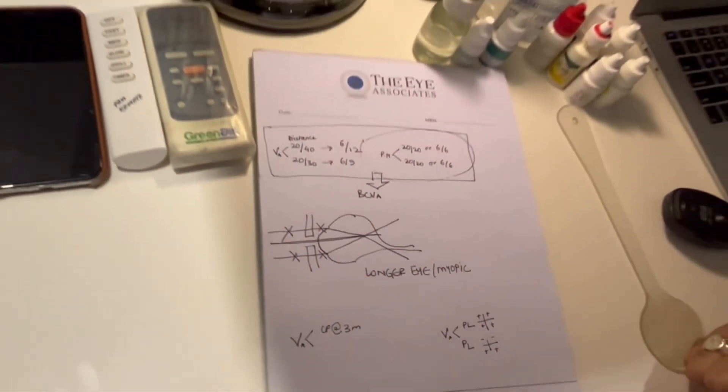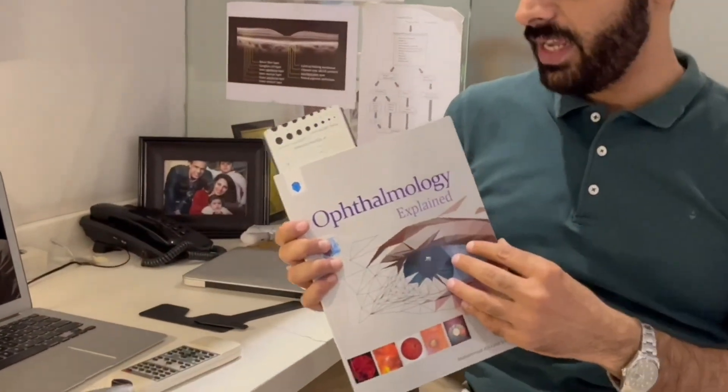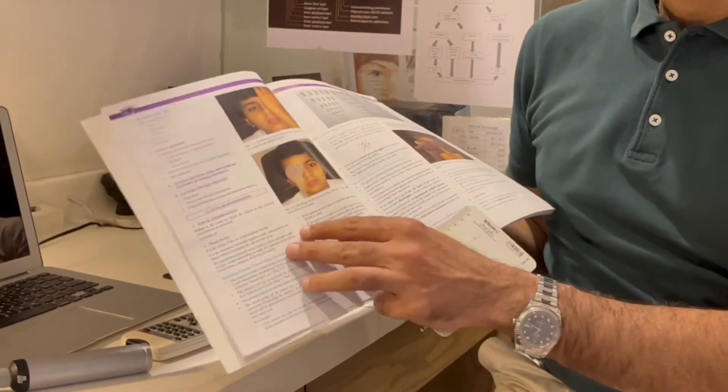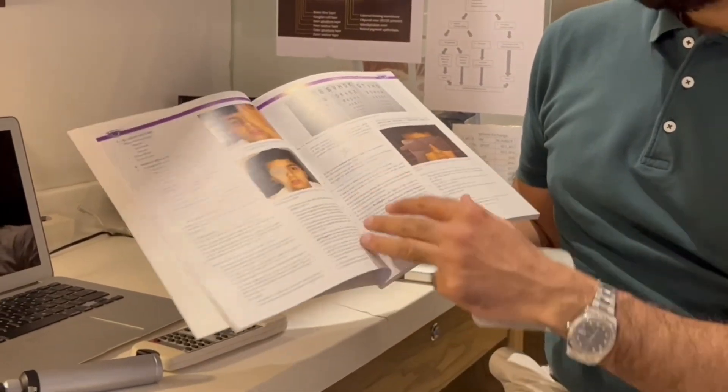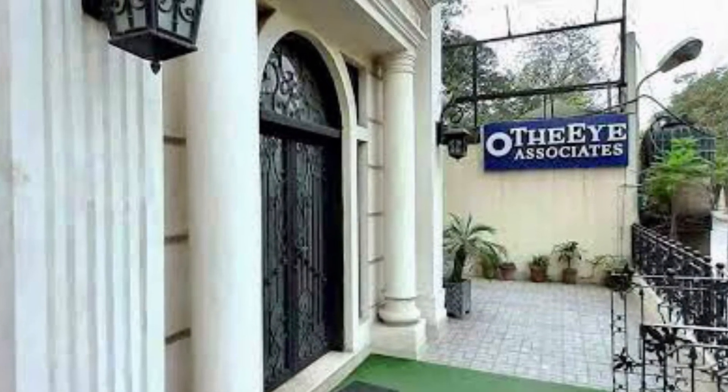If the patient is not able to perceive the light at all, I write the visual acuity as NPL, which means no perception of light. If you want to read more about this, you can go to Ophthalmology Explained and read chapter one, which covers the whole visual acuity section. Thank you.